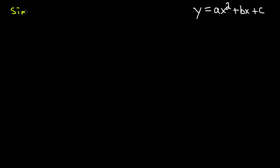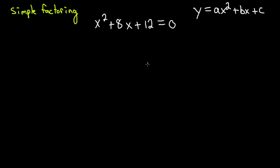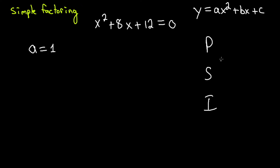Let's start off with simple factoring. Here's an example: x squared plus 8x plus 12 is equal to 0. We can apply simple factoring here because a is equal to 1. If there's no number in front of x, that means a is equal to 1, and whenever a is equal to 1 we can apply this simple factoring. The strategy here is called PSI. P stands for product, that is between a and c. In our case a is 1 and c is 12, so the answer here would be 12.